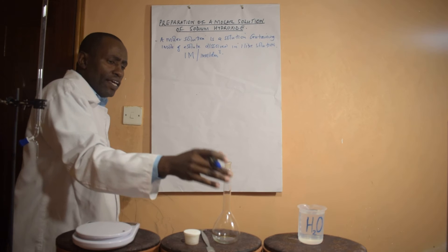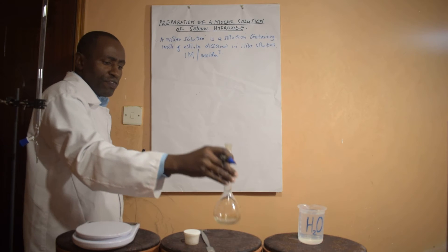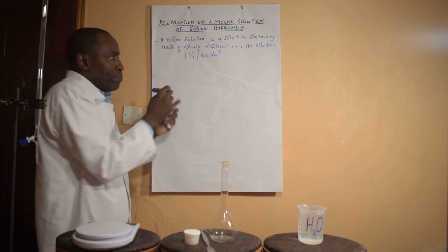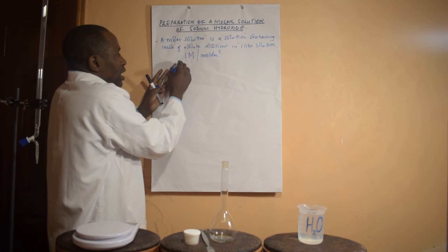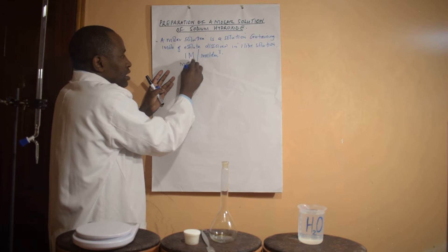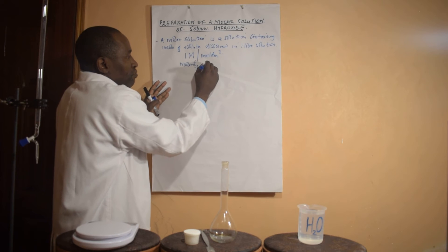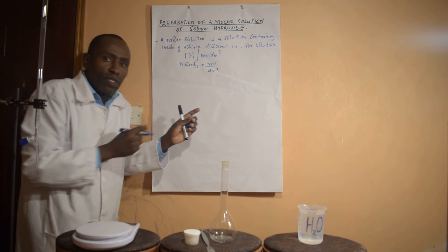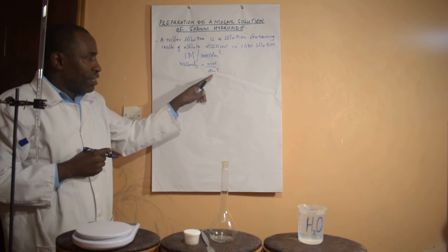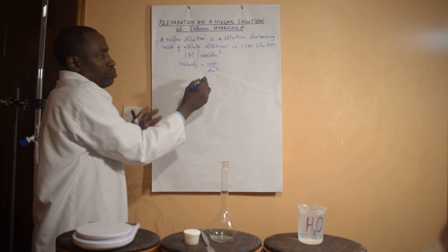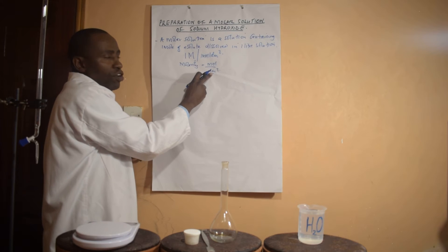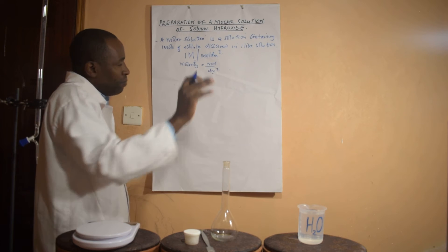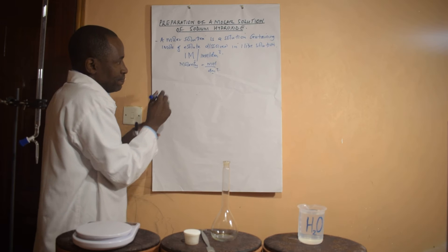For instance, if I'm going to prepare a molar solution using a 250 mL volumetric flask, what do I need to do? In my previous series, I discussed what molarity is. Molarity can be given by the number of moles of solute divided by volume in liters. So if I'm preparing a solution with a 250 mL volumetric flask, how much moles do I require?